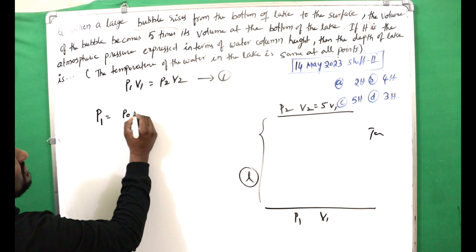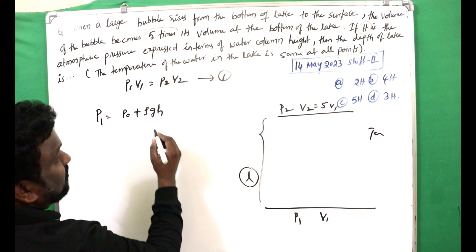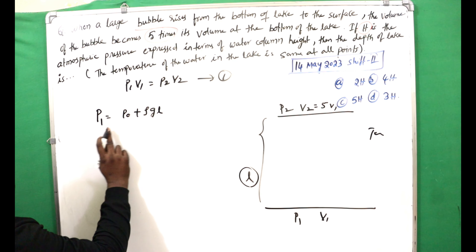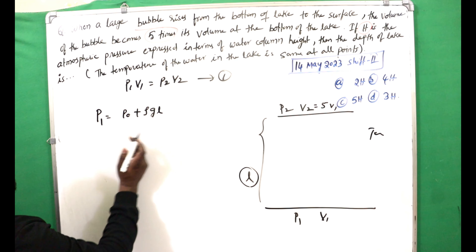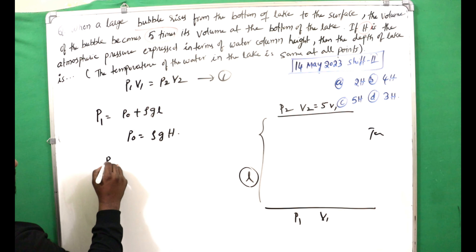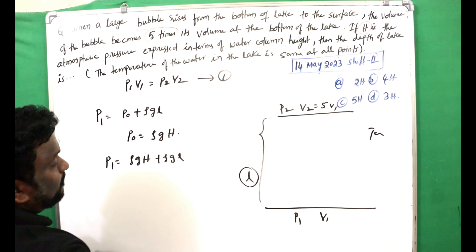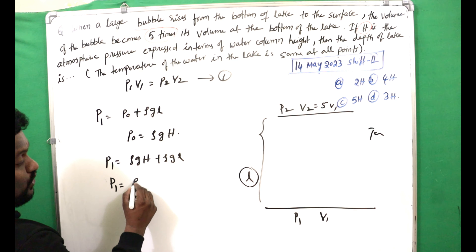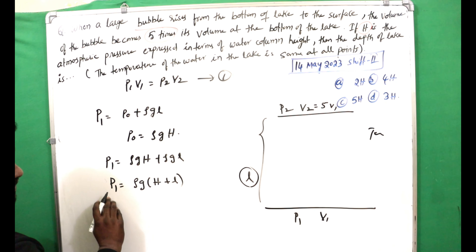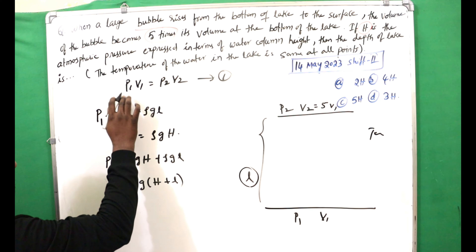Variation of pressure with depth: P1 equals P0 plus ρgL. The value of P0 is ρgH, so P1 equals ρgH plus ρgL, which gives P1 equals ρg(H + L).